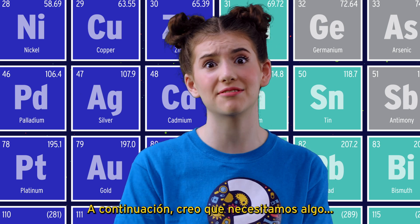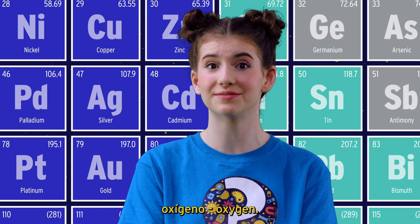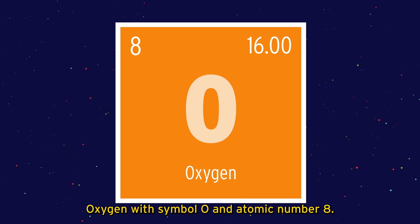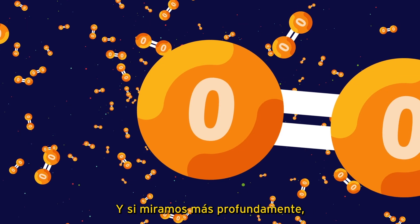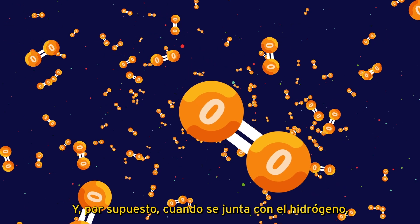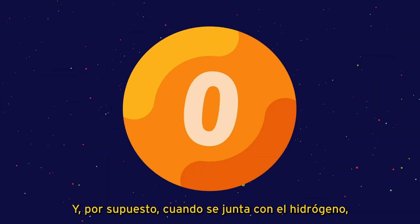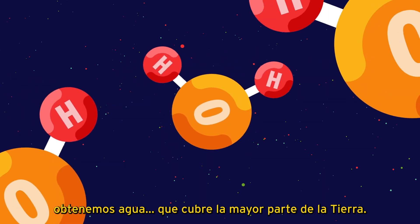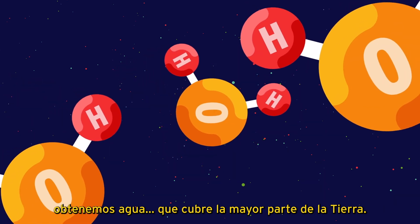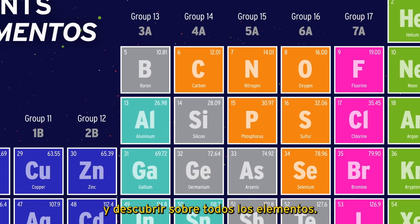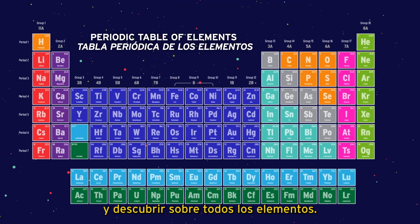Next, I think we need some oxygen — oxígeno, con Symbolo O y Número Atómico 8. As we look deeper, oxygen is everywhere — it's in the air that we breathe, and of course when it gets together with hydrogen, we get water, which covers most of the Earth. We could go on all day — there's so much to learn and find out about all these elements.